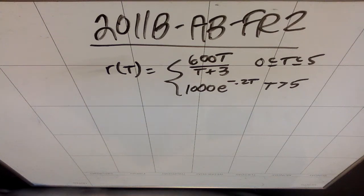Good AP review. This is 2011 form B AB free response. A 12,000 liter tank of water is filled to capacity. At time t equals zero, water begins to drain out of the tank at a rate modeled by R of t, which is this piecewise function here.